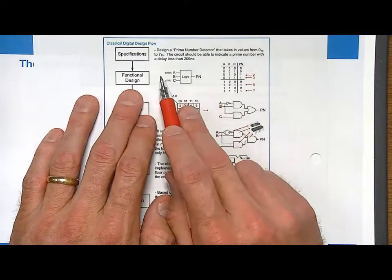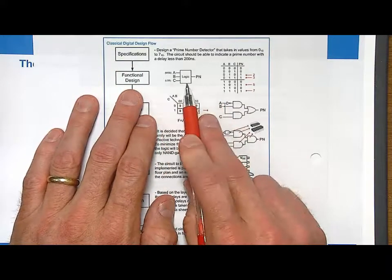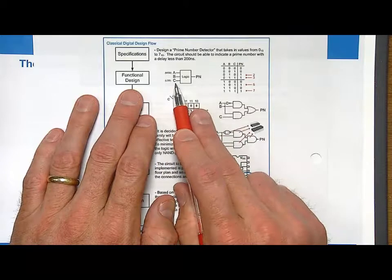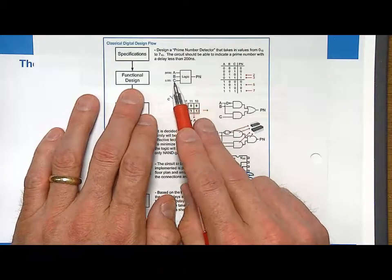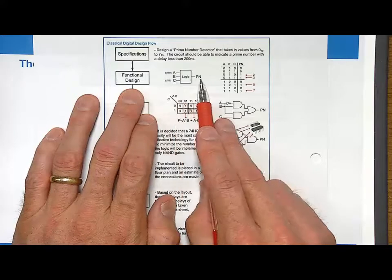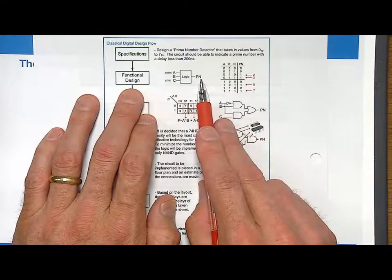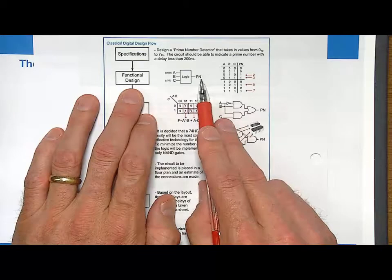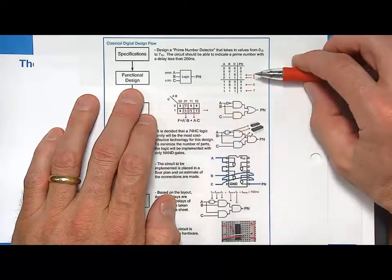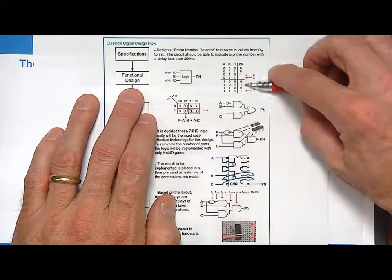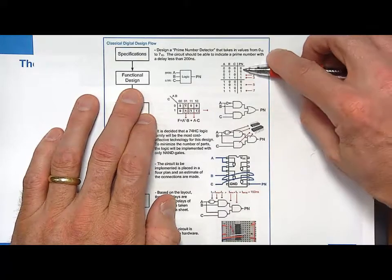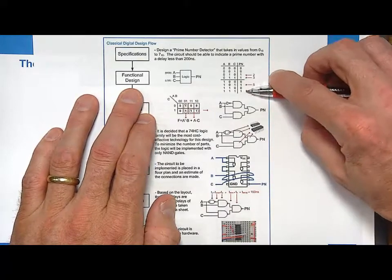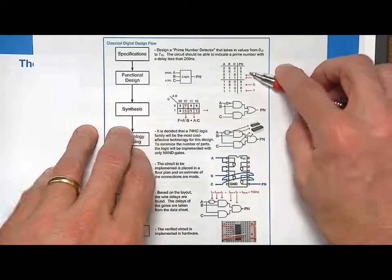The functional design is going to look like this. We're going to have a system that has three inputs, and these are binary inputs. That will represent 0 to 7 in decimal using the code 000 up to 111. It'll have an output called PN that'll assert every time there's a prime number. The functionality is the truth table, since this is a combinational logic circuit. We'll put ones wherever it's a prime number and zeros wherever it is not. That's the description of the behavior.